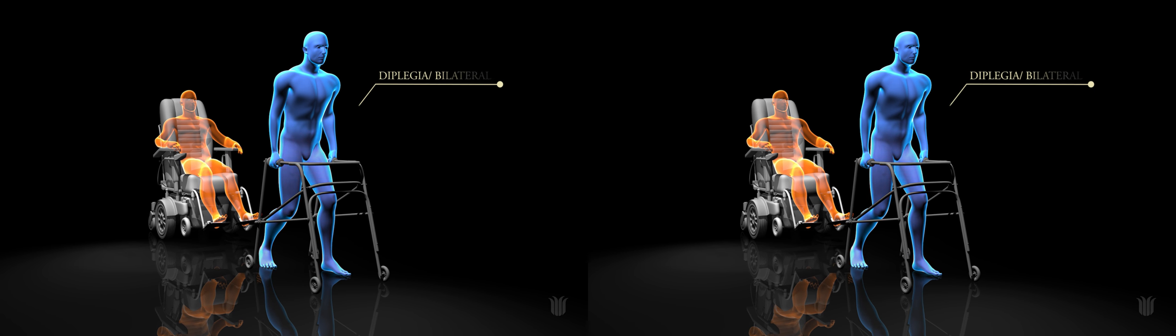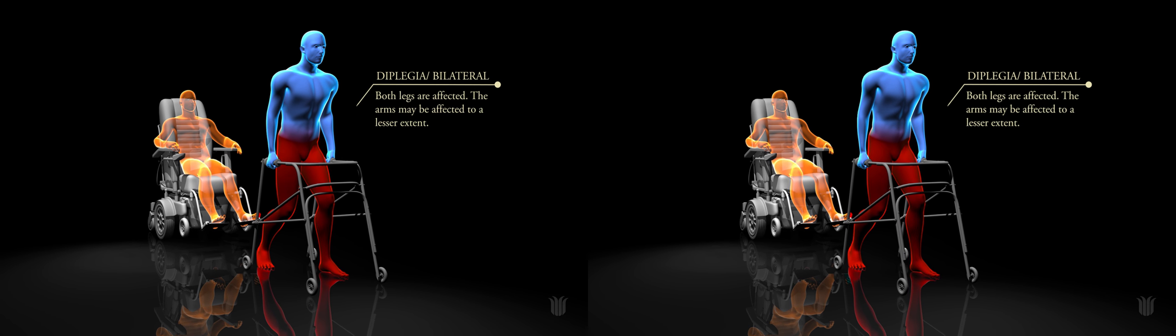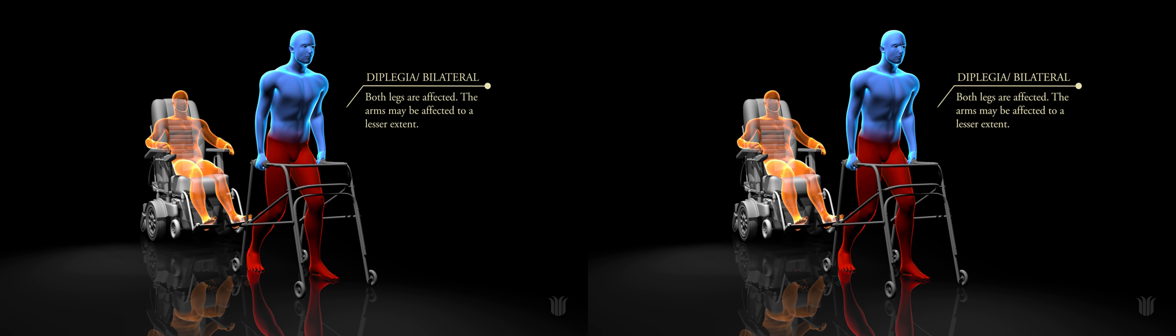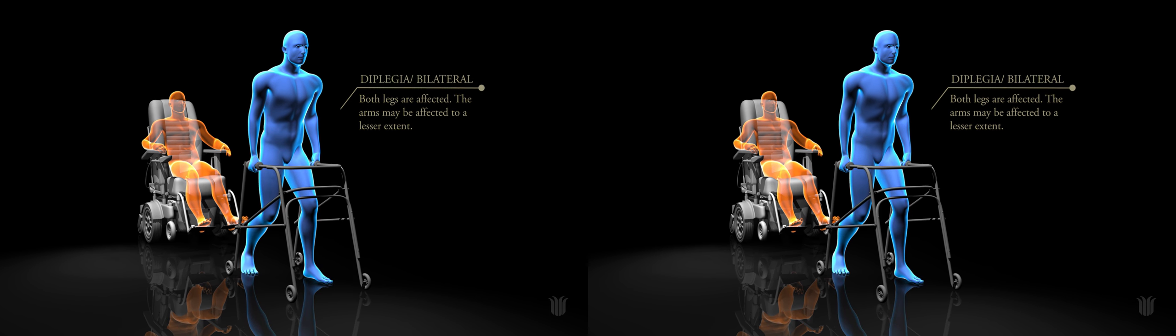Where both legs are mainly affected, this is called diplegia. People with diplegia often also have difficulties with fine movements of their hands.